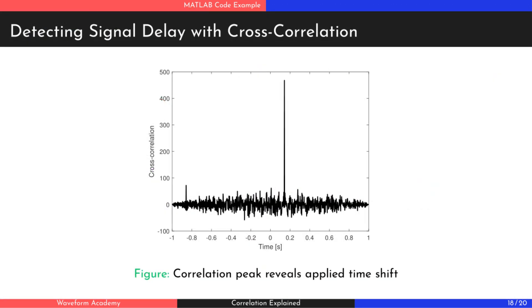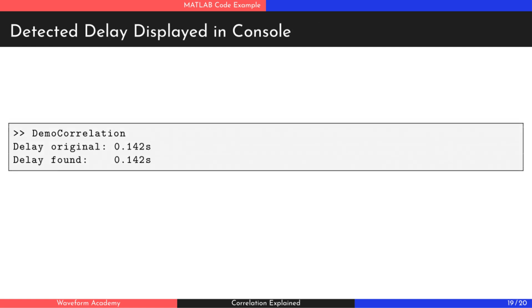As you can see, the cross-correlation plot shows a single strong peak, revealing the exact time shift we applied earlier. And just to confirm it, the console prints the discovered delay, matching the one we introduced.